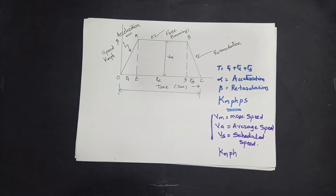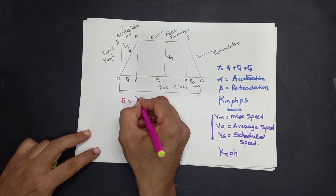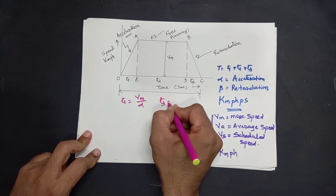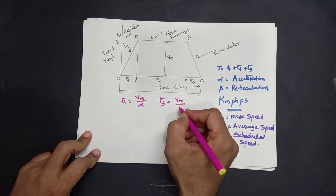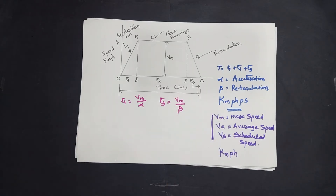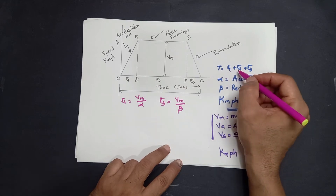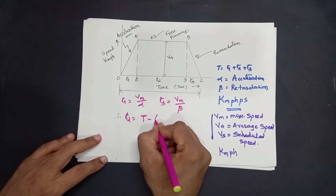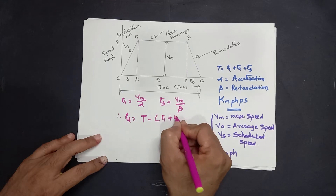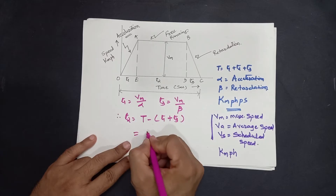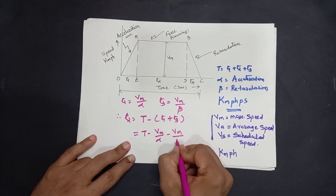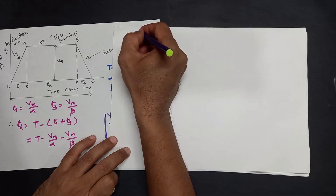The time required for acceleration, T1, can be written as Vm divided by alpha. Similarly, T3 can be written as Vm divided by beta. Since total time T equals T1 plus T2 plus T3, T2 can be written as T minus T1 minus T3, which gives T minus Vm/alpha minus Vm/beta.